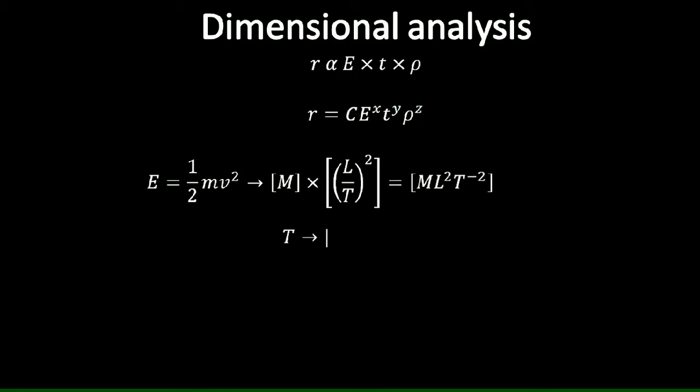And we get the following as a dimension of energy. Time is represented as t, which is already mentioned. Density is mass over volume. The dimension of mass is M. And for volume, we know that it is the unit of distance cubed. We use meter cube or centimeter cube. So, we know that the dimension of volume is L cubed. So, the dimension of density is as follows.